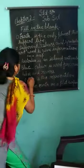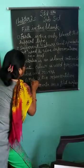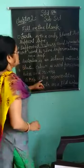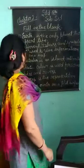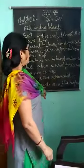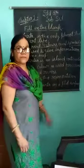A map. A map is the representation of the earth on a flat surface.